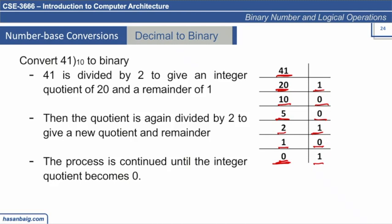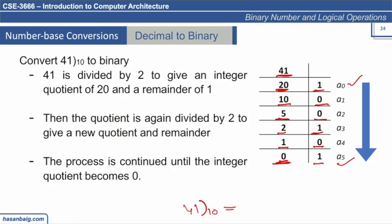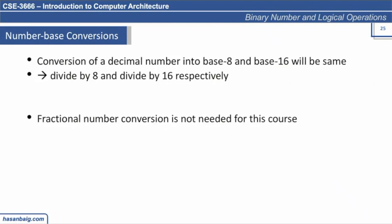Once the quotient becomes 0, that is your stopping point. You read the remainders from bottom to top — the first remainder is the rightmost bit (a0) and the last is the leftmost bit (a5). So the binary equivalent of 41 decimal is 1 0 1 0 0 1, reading from left to right.